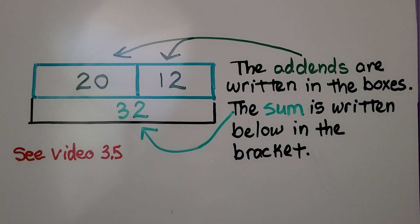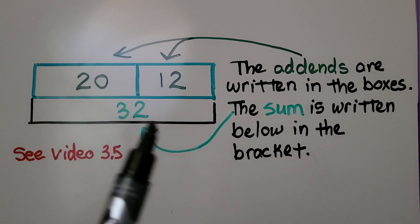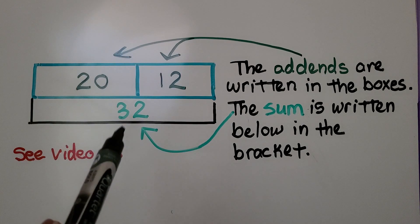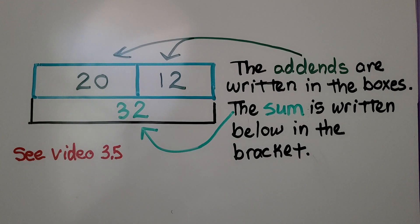In a bar graph, the addends are written in these boxes and the sum is written below in the bracket. You can even find it written down here below the bracket and we learned about these back in video 3.5 when we learned about related addition and subtraction facts. That video is in the description in case you need a link.